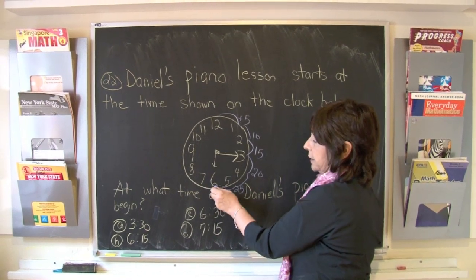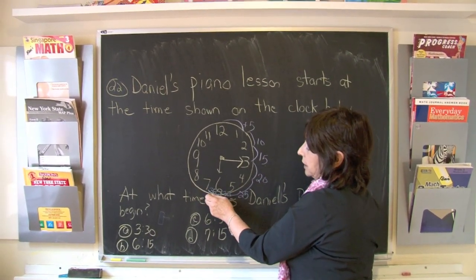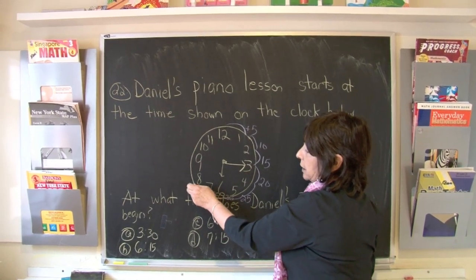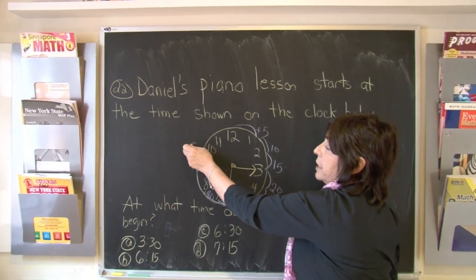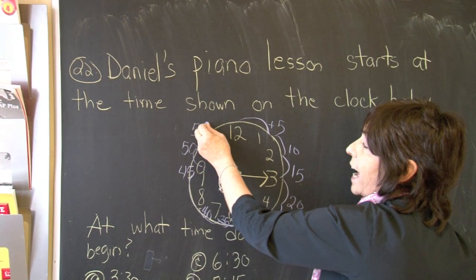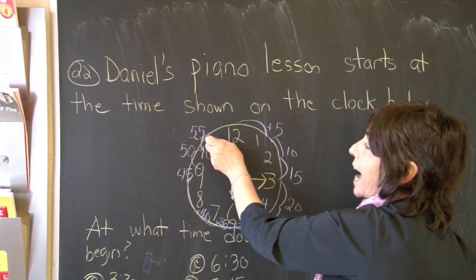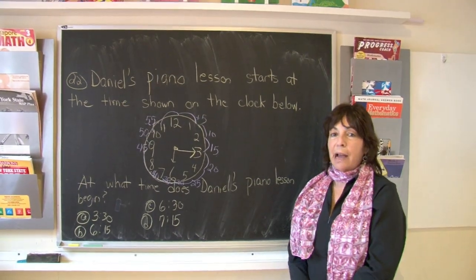Wherever the hour hand is. So this would be thirty-five minutes after the hour, forty minutes after the hour, forty-five minutes after the hour, fifty minutes after the hour, fifty-five minutes after the hour, and back to o'clock, we would move to the next hour. There are only sixty minutes in an hour.